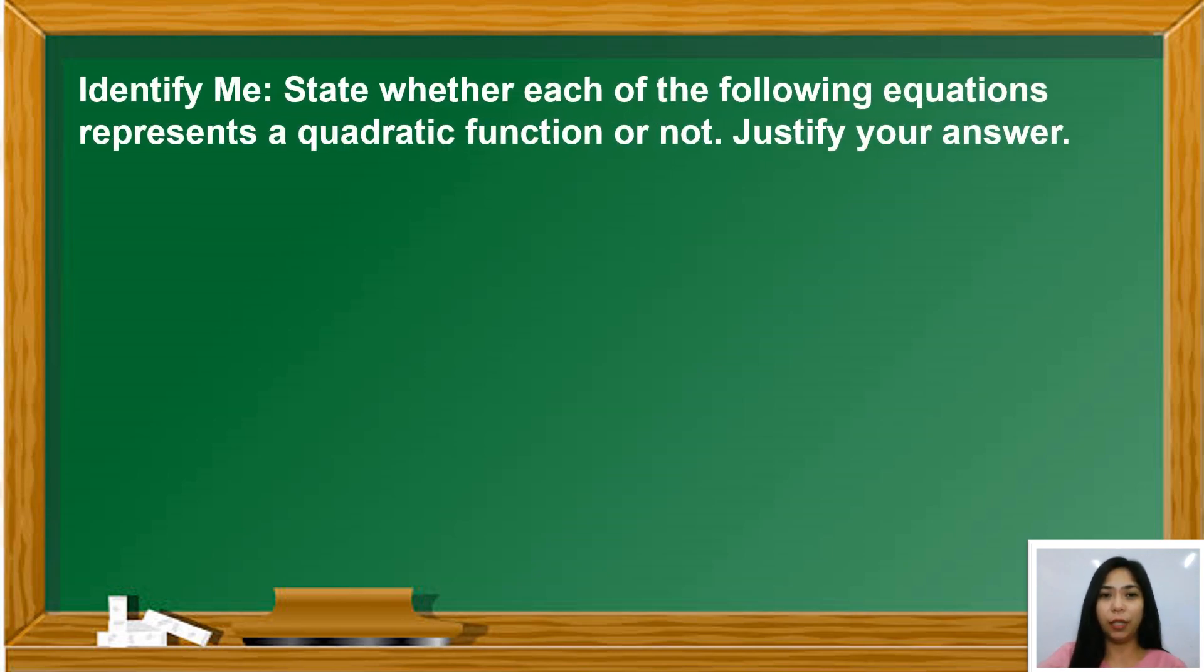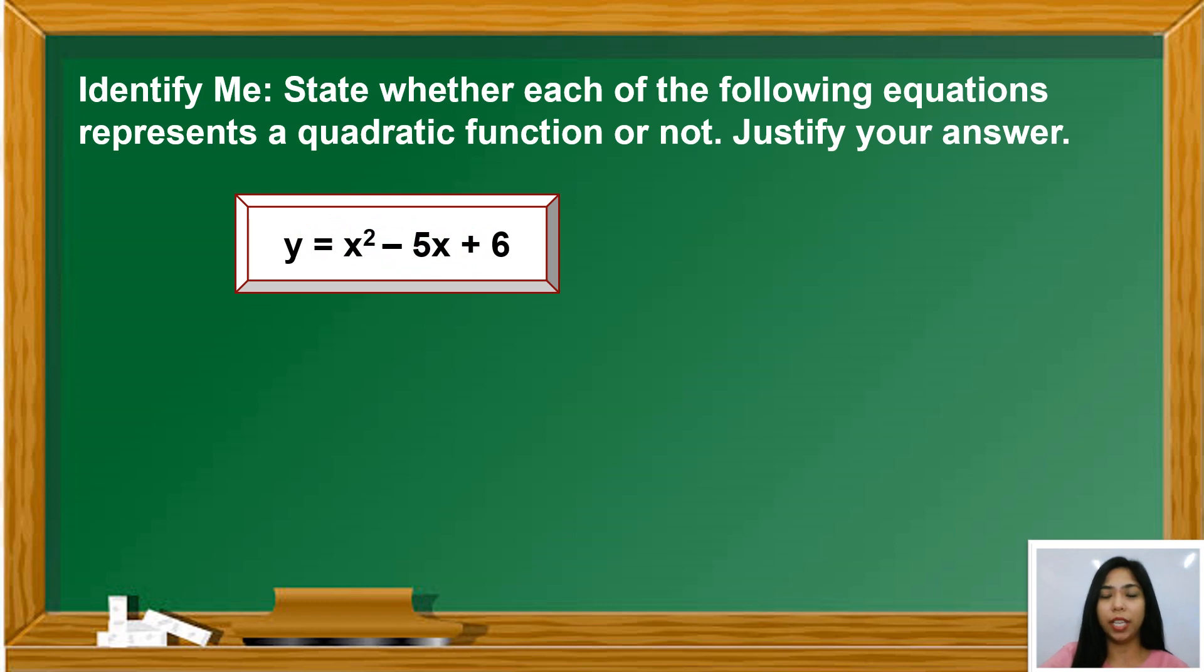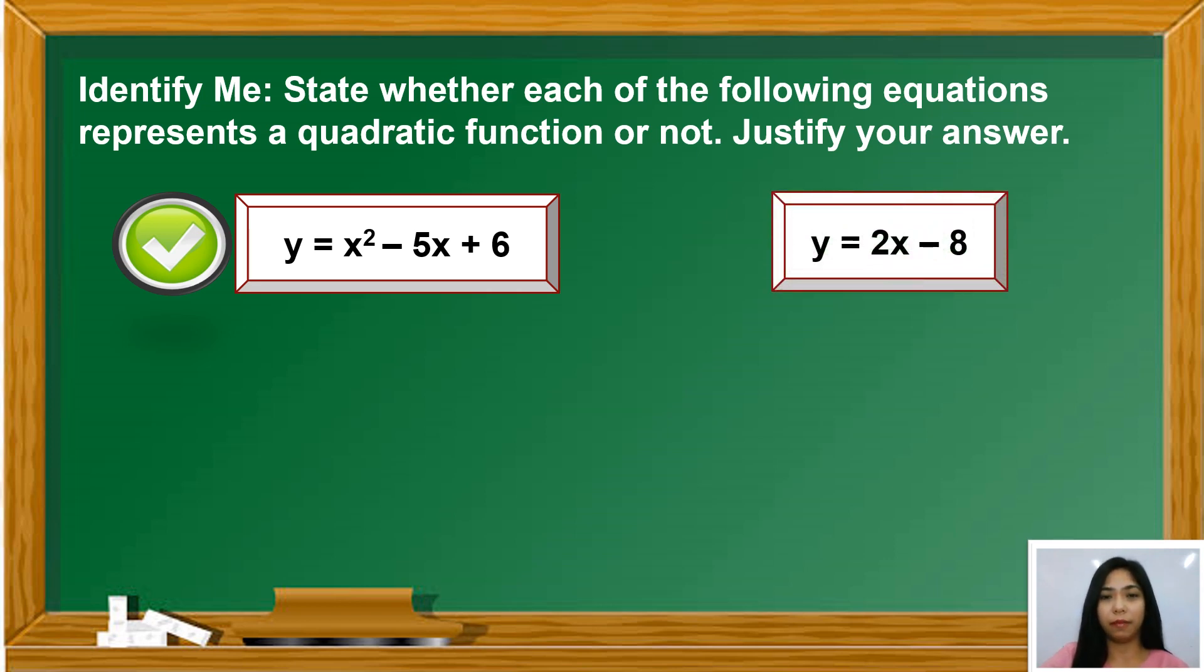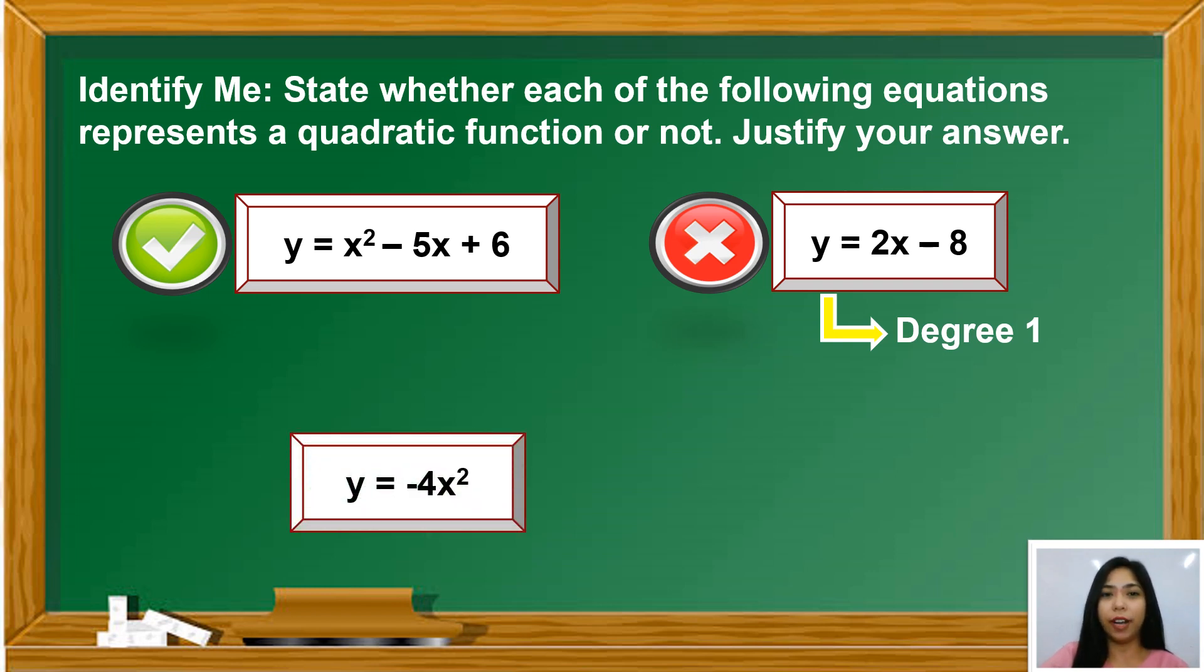So let's have this activity. State whether each of the following equations represents a quadratic function or not. Justify your answer. Let's have the first example. Y equals X squared minus 5X plus 6. It is a quadratic function because the degree is 2. How about Y equals 2X minus 8? It is not a quadratic function because the degree is 1. Then, Y equals negative 4X squared is also a quadratic function.